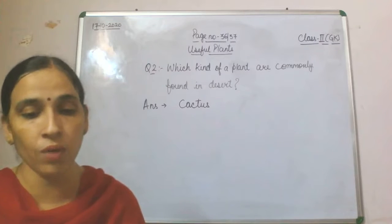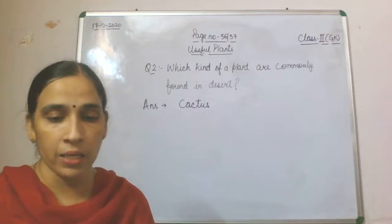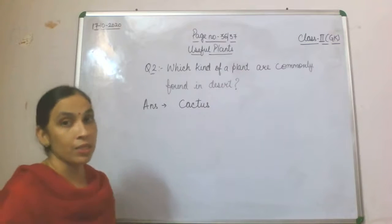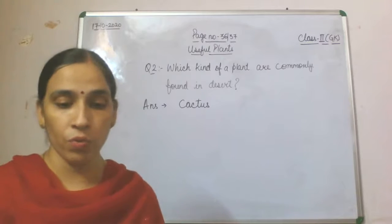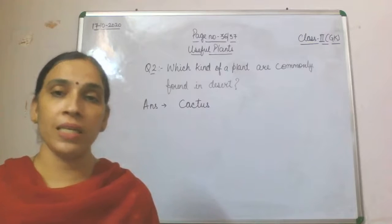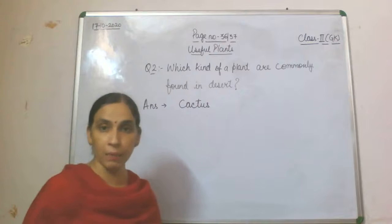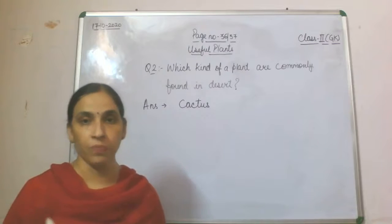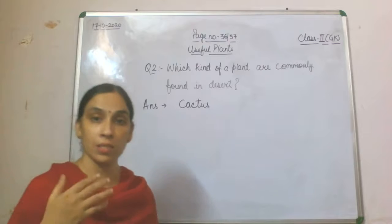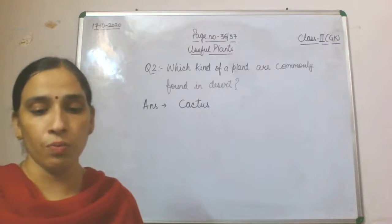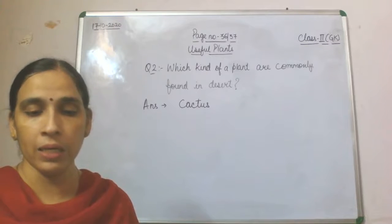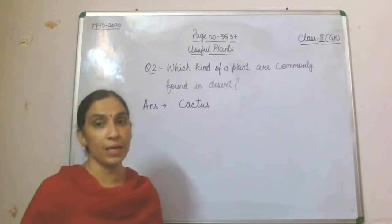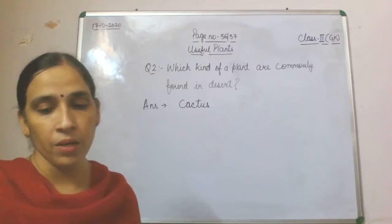The leaves of which plant are used as food? Options include onion, cabbage, eggs, and ginger. The answer is cabbage — cabbage leaf is used as food. Next: which of these is a creeper? Creepers are plants which grow only on the earth's surface, while climbers use support to climb. The options are pumpkin, bunny plant, cactus, and none of these. Pumpkin is a kind of creeper.